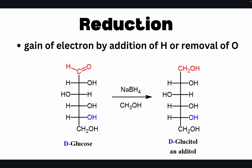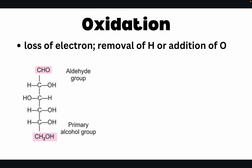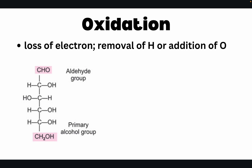The next reaction is oxidation — a loss of electrons, either by removing hydrogen or adding an oxygen atom. The glucose molecule has two functional groups: an aldehyde group and a primary alcohol group at carbon 6. Glucose can produce three different products during oxidation, depending on the reagent used.